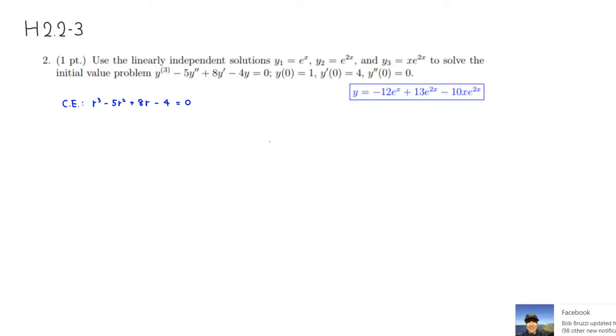Which means that one of the factors should be r minus 1. Then we can figure the rest out by doing either long division or synthetic division. So I'll do a long division. You have r cubed minus 5r squared plus 8r minus 4. We're going to divide this by r minus 1.